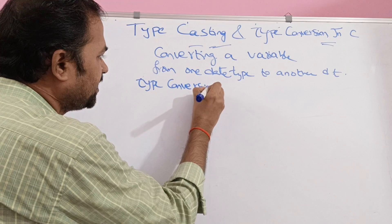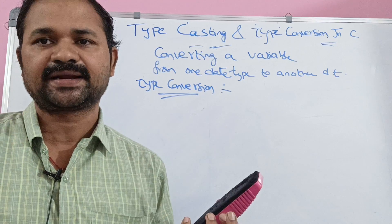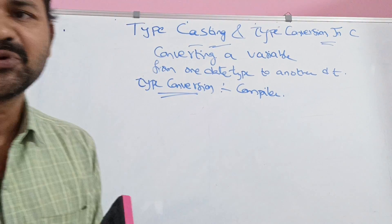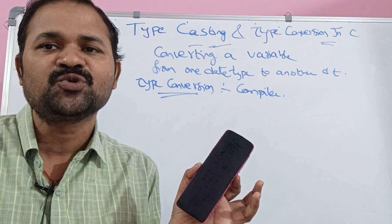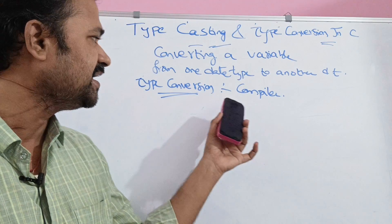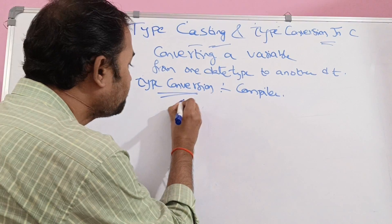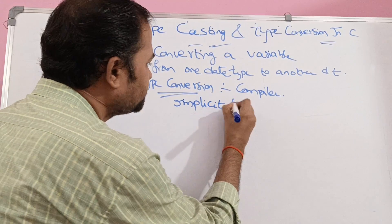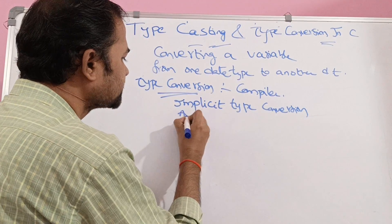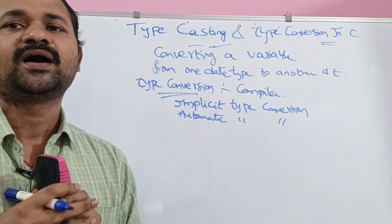Type conversion means the conversion is done implicitly by the compiler. The programmer or user doesn't need to perform the conversion — it is automatically performed by the compiler. That's why type conversion is also called implicit type conversion or automatic type conversion.